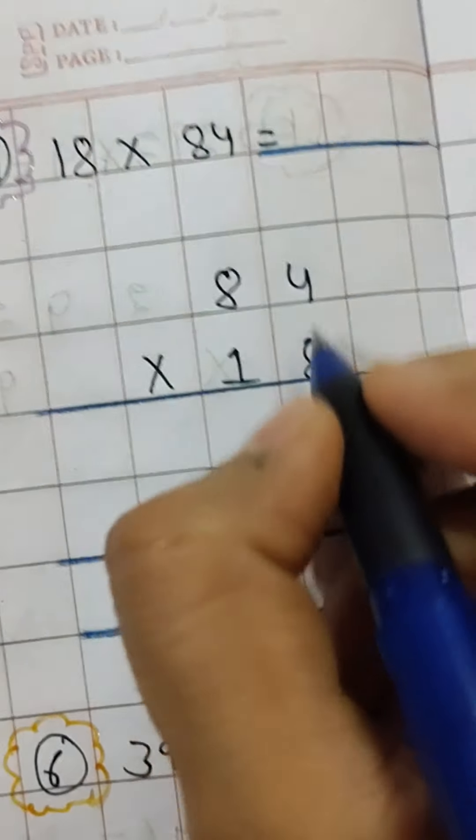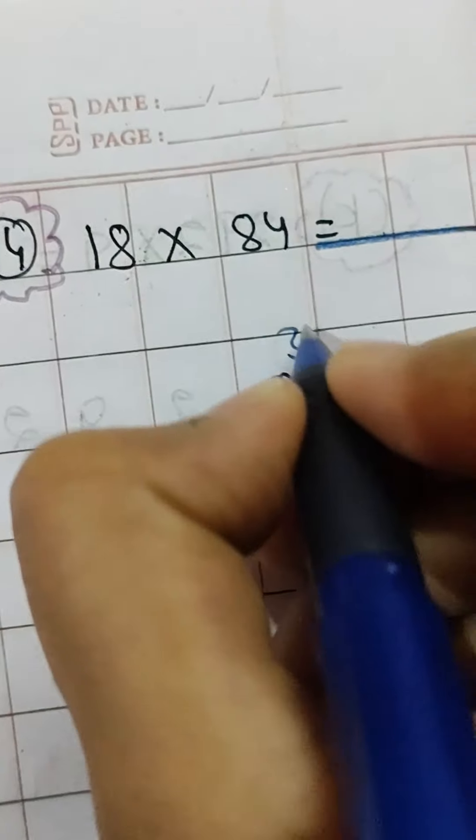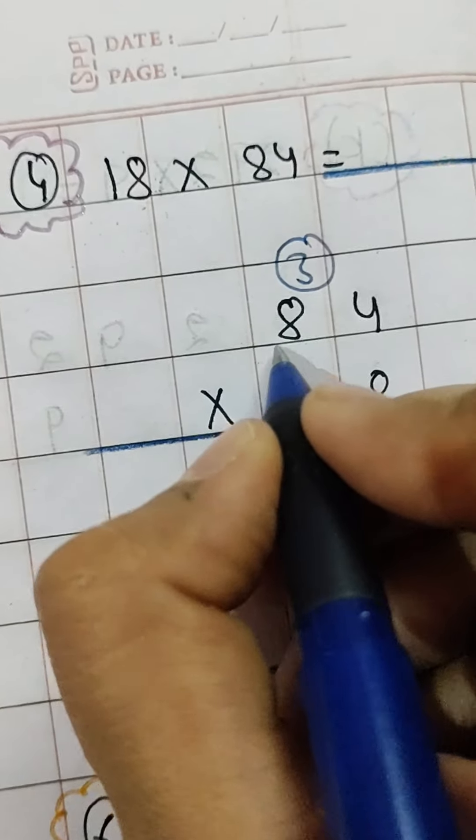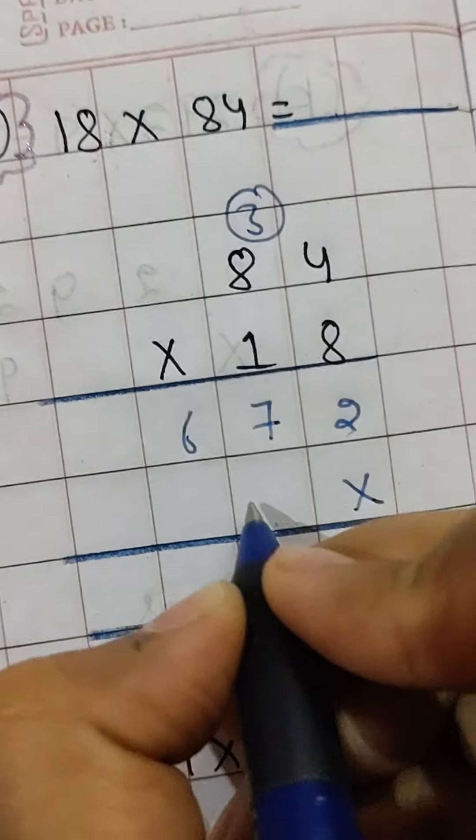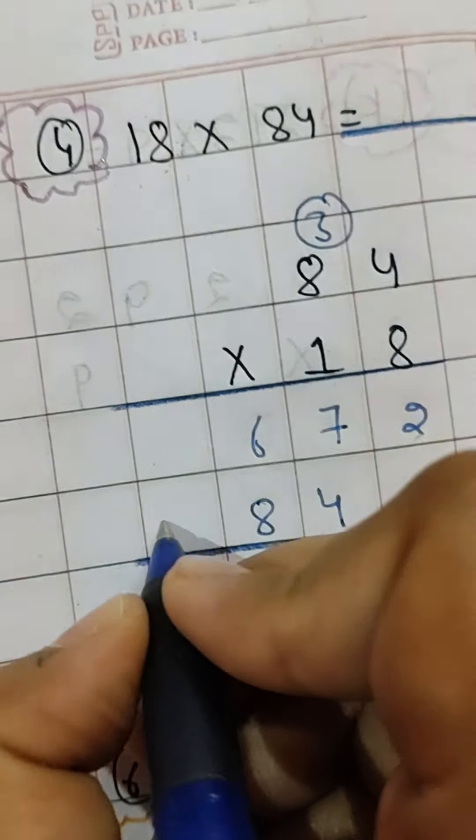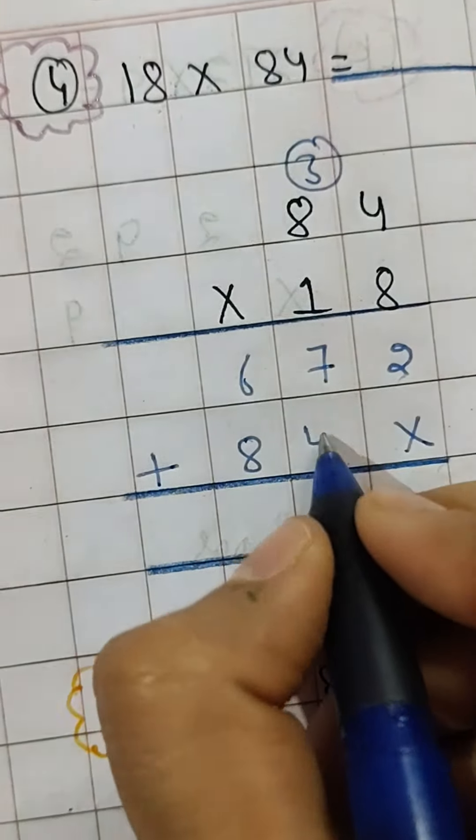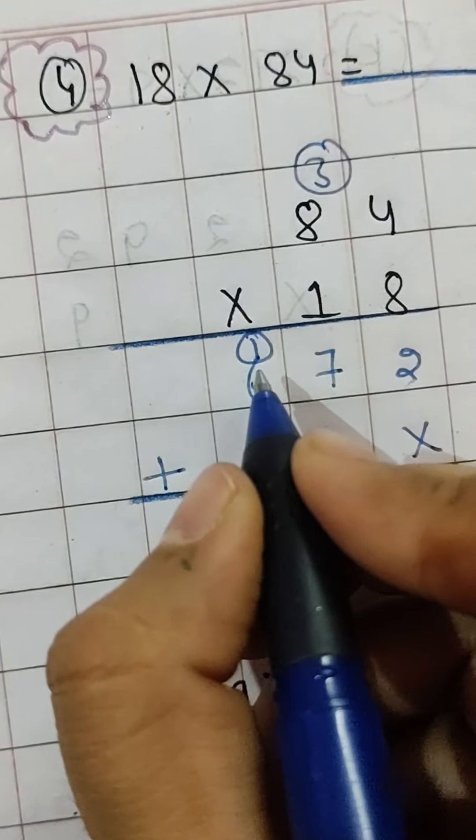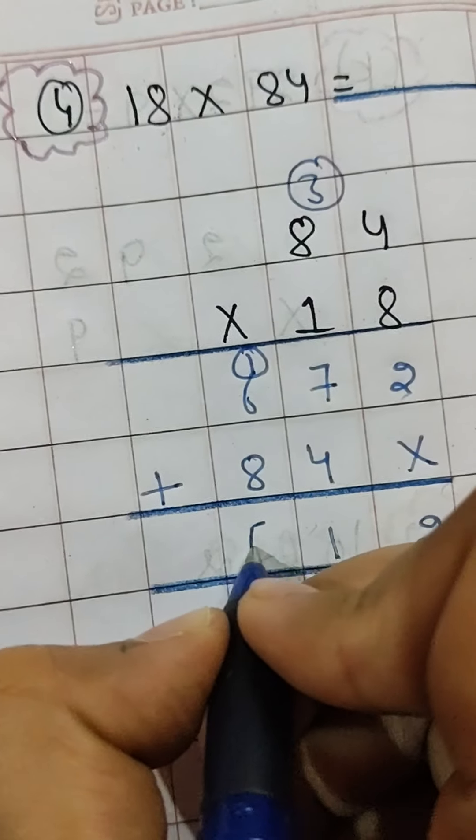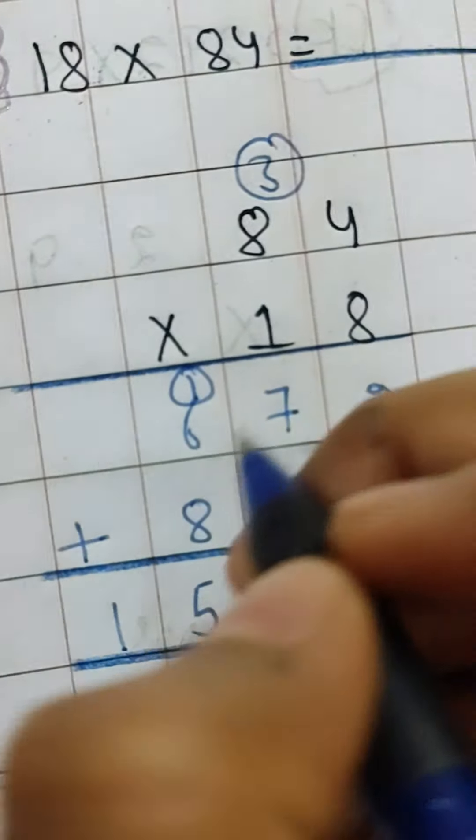You just have to simply multiply this thing. 848 times something: 8 times 4 is 32, 2 here, 3 here, 8 times 8 is 64, 64 plus 3 is 67. Multiply by 7: 4 times 7 is 28, 8 plus 4 is 12, 1 here, then 5 plus 6 is 11. 8 plus 1 is 9, 9 plus 6 is 15. So your answer is 1512.